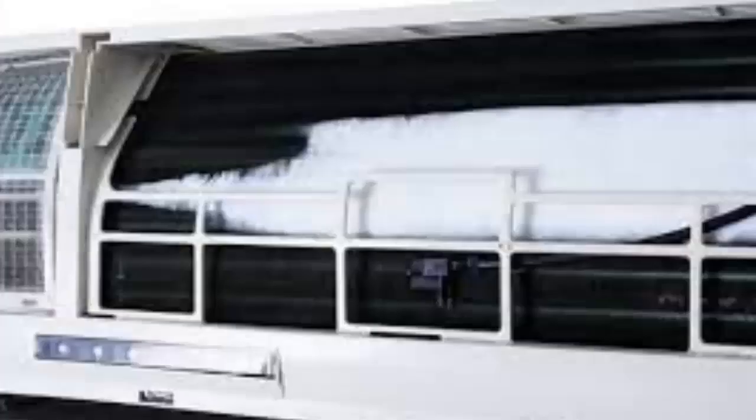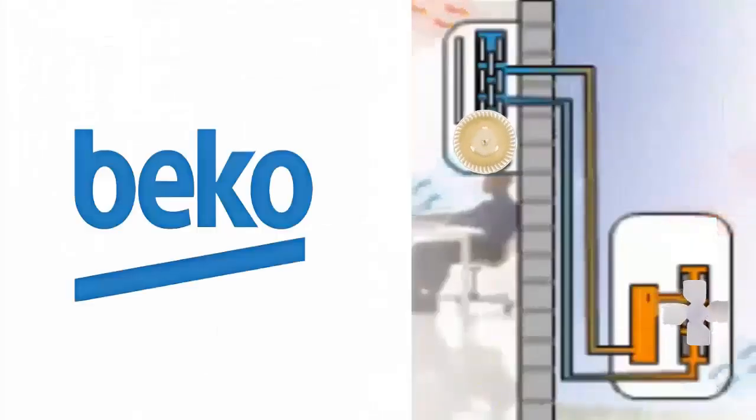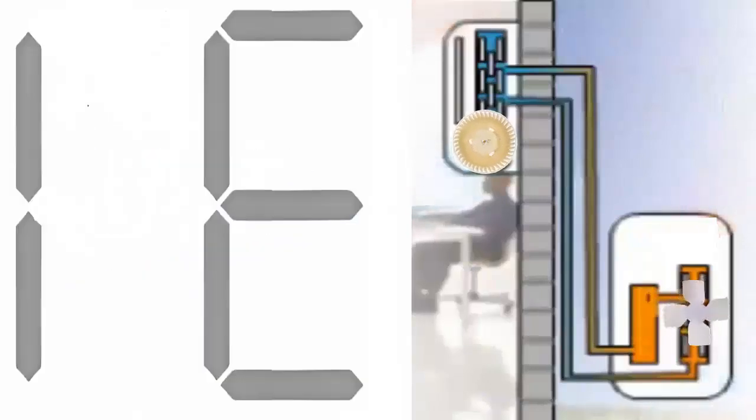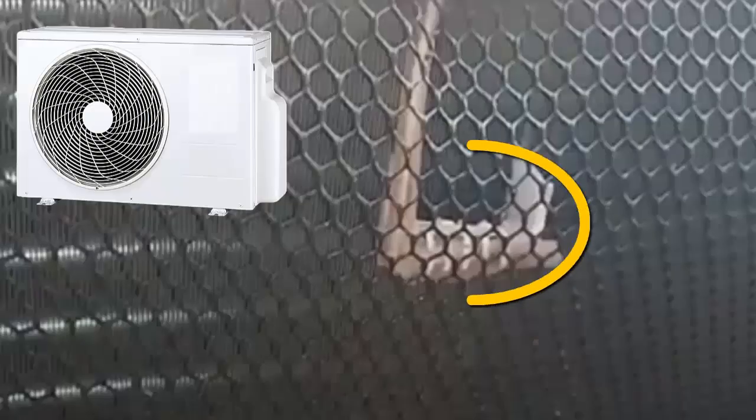Error code E1 refers to issues with the sensor located in the outdoor unit, which measures the air temperature drawn in by the outdoor unit's fan, allowing an average temperature reading of the outdoor environment.